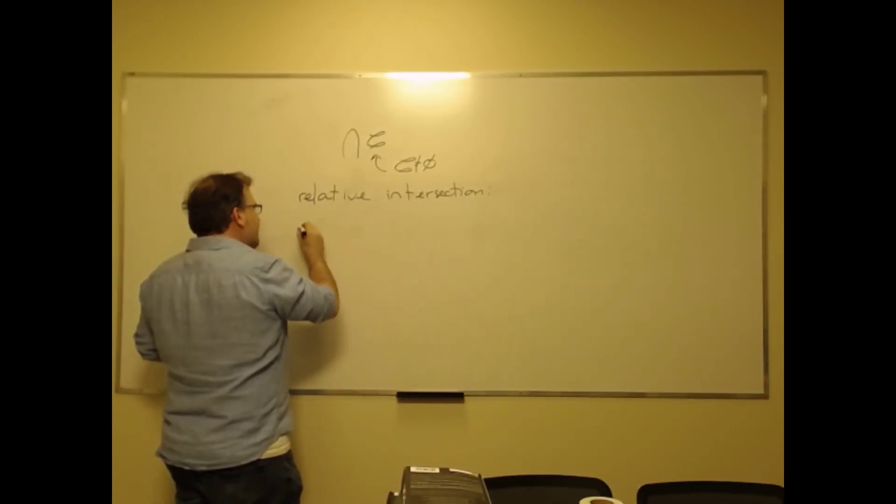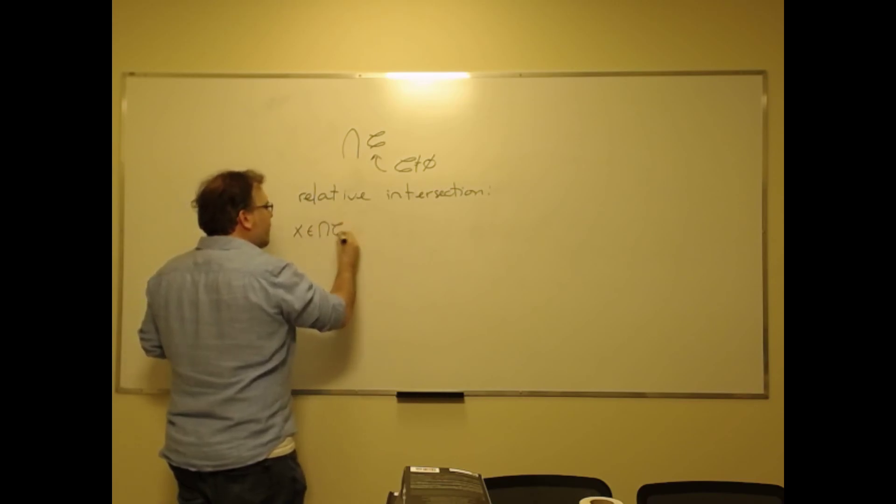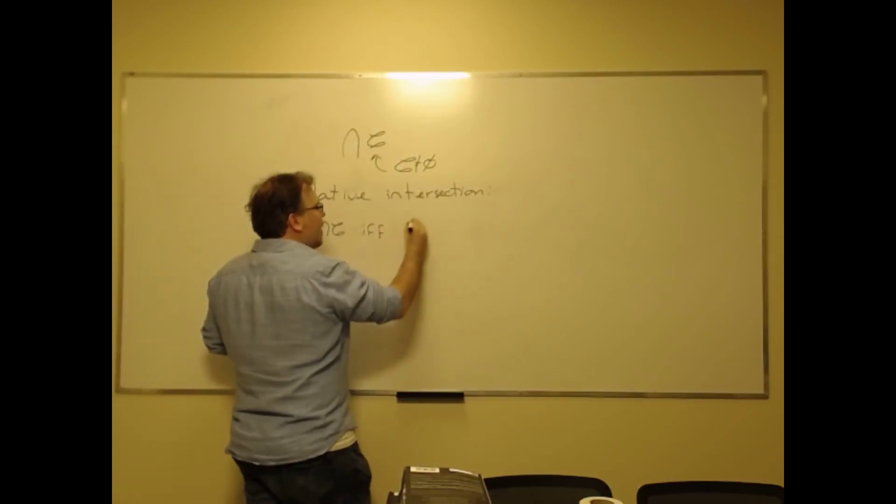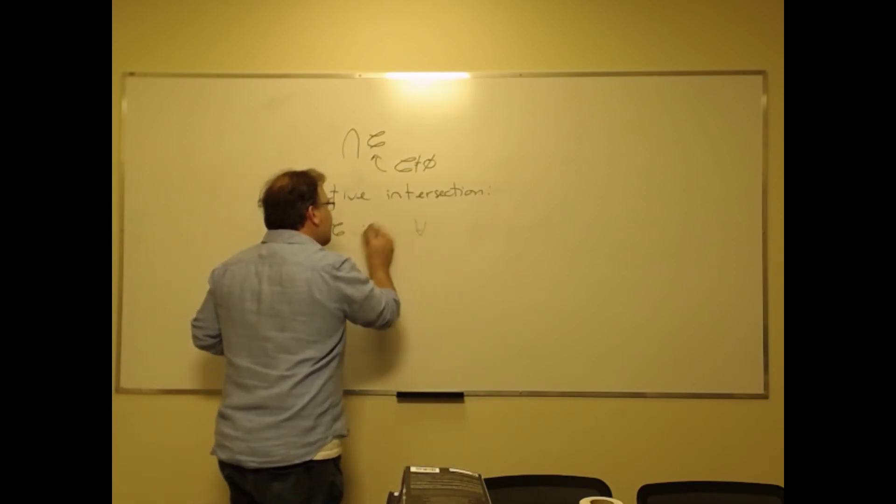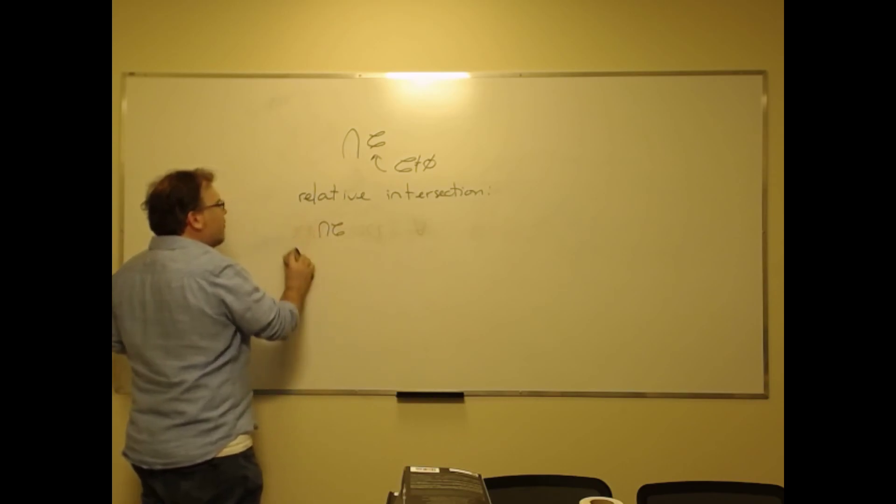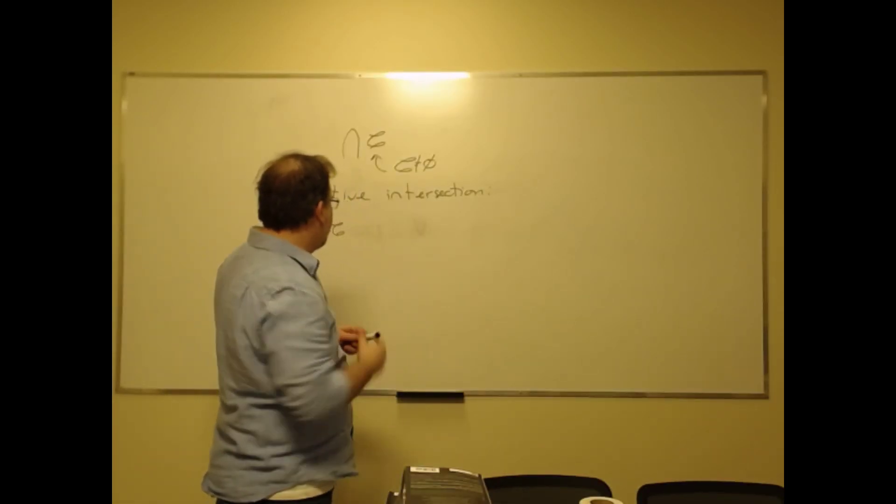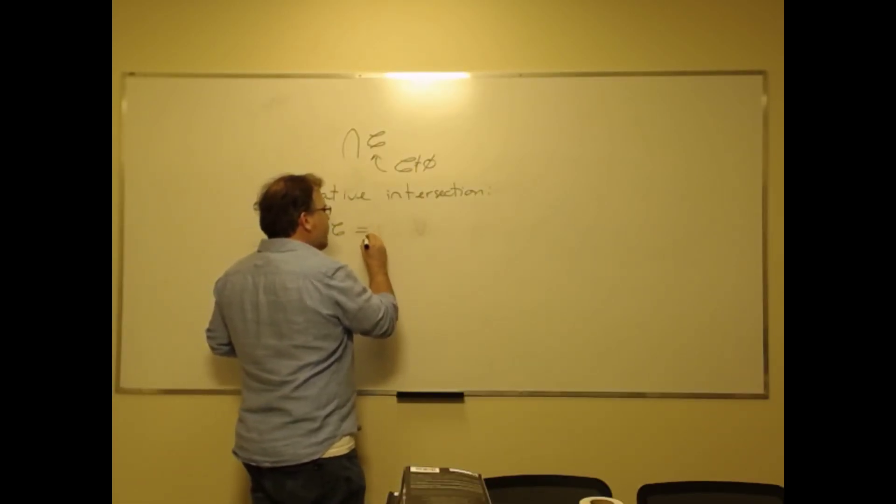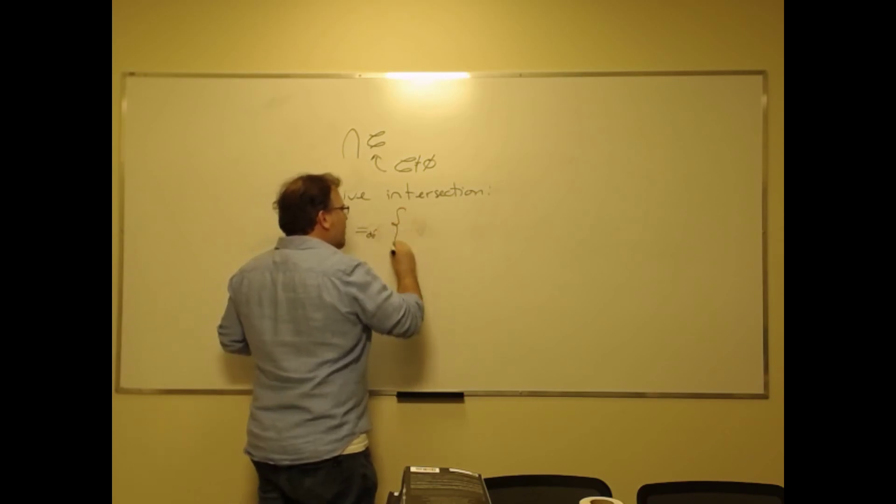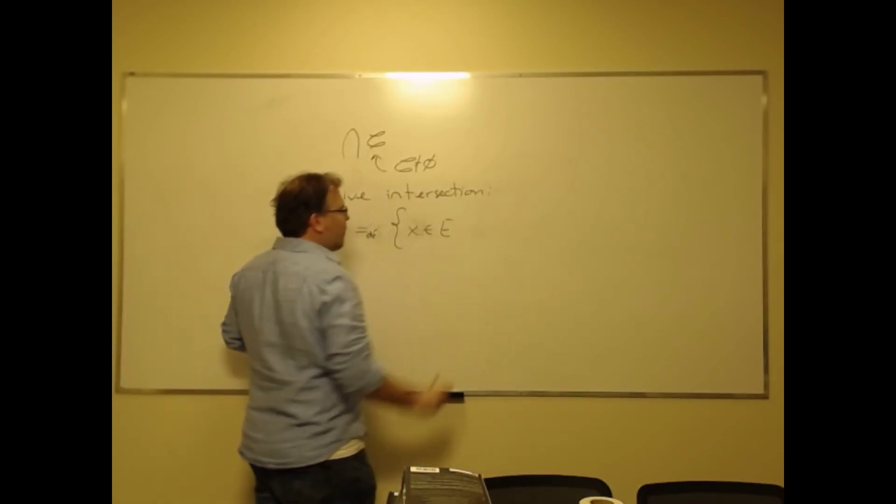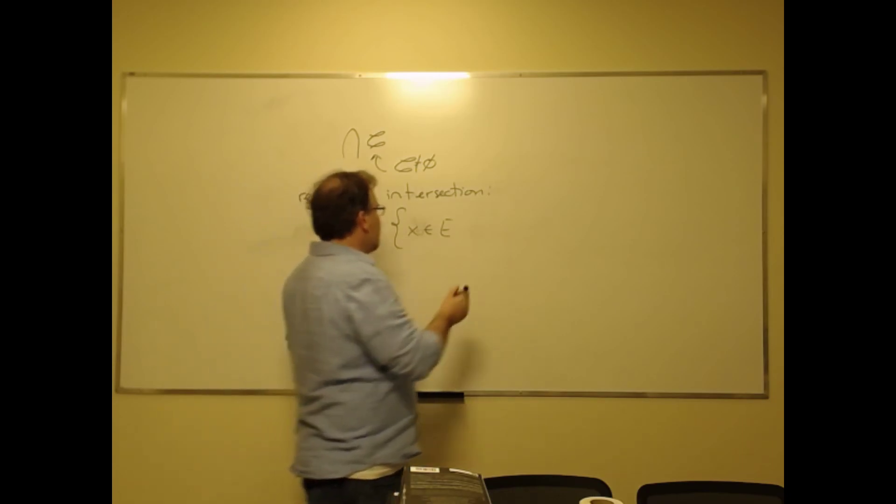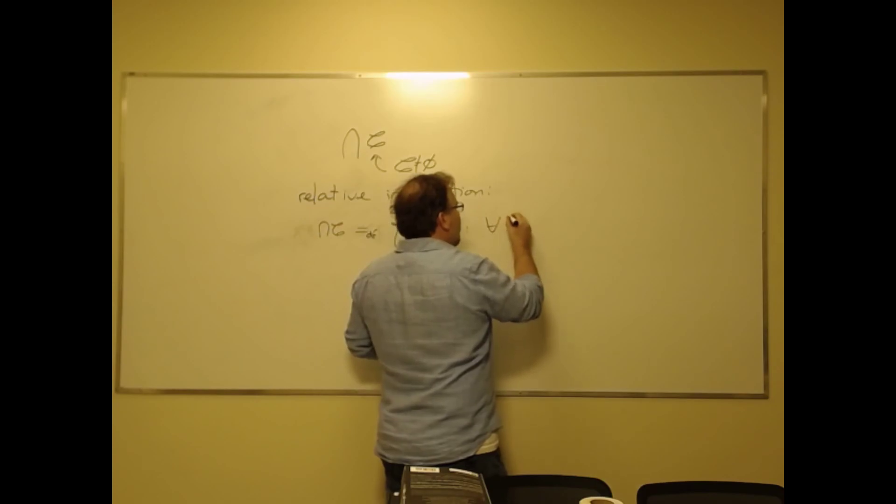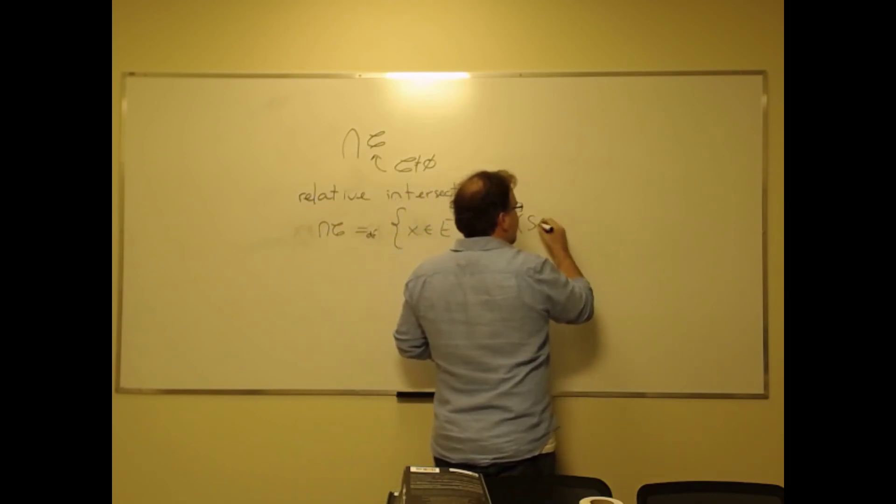Then we would write that X is in the relative intersection if and only if—well, the relative intersection by definition would be the set of objects that are in the environment. All those objects have to be in the environment, and then we just write: for all S, if S is in the collection, then X is in S.